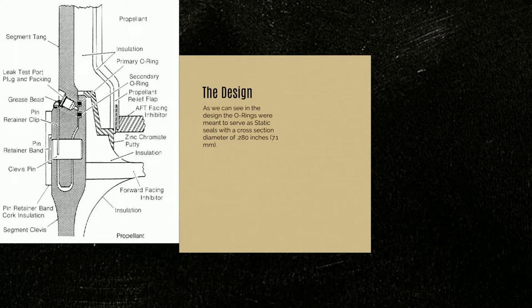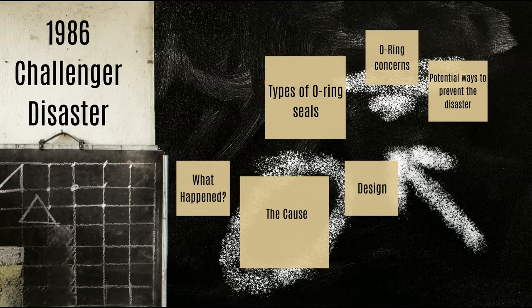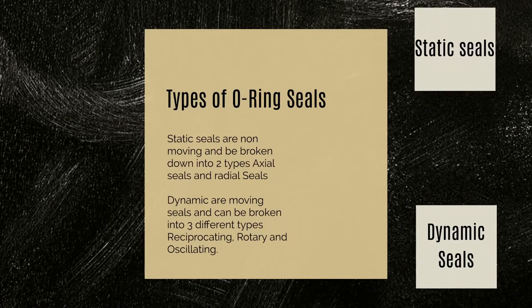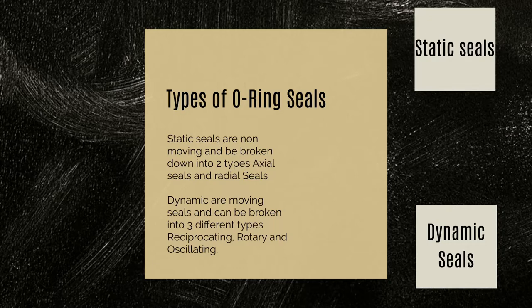Here's a picture of the design. As we see, O-rings were meant to serve as static seals with a cross-section diameter of 0.280 inches or 7.1 millimeters. Static seals are fantastic at staying stationary. There are two types of O-ring seals: static seals, which are non-moving and can be broken down into axial seals and radial seals, and dynamic seals, which are moving seals broken into three types — reciprocating, rotary, and oscillating.